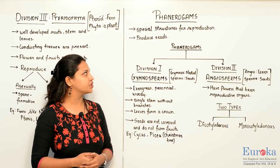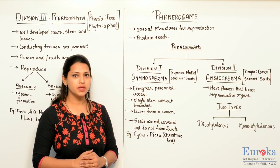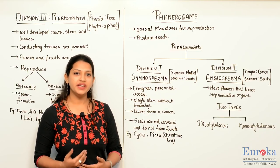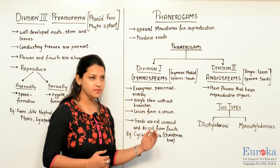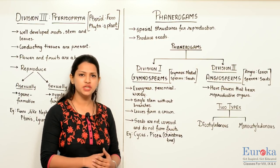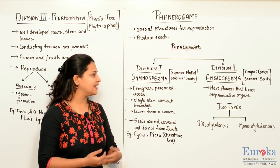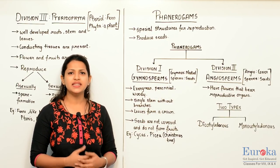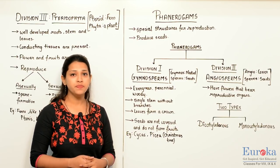Plants having special features for reproduction that produce seeds come under Phanerogams. Depending upon whether their seeds are covered or naked, Phanerogams are further divided into two divisions: Gymnosperms and Angiosperms. Gymnosperms — 'gymno' meaning naked and 'sperms' meaning seeds — have naked seeds. You must have noticed a cycas tree having a crown-like leaf and a small cone in the middle. These belong to the division Gymnosperms. They are also evergreen, perennial — meaning long-lasting — and woody.